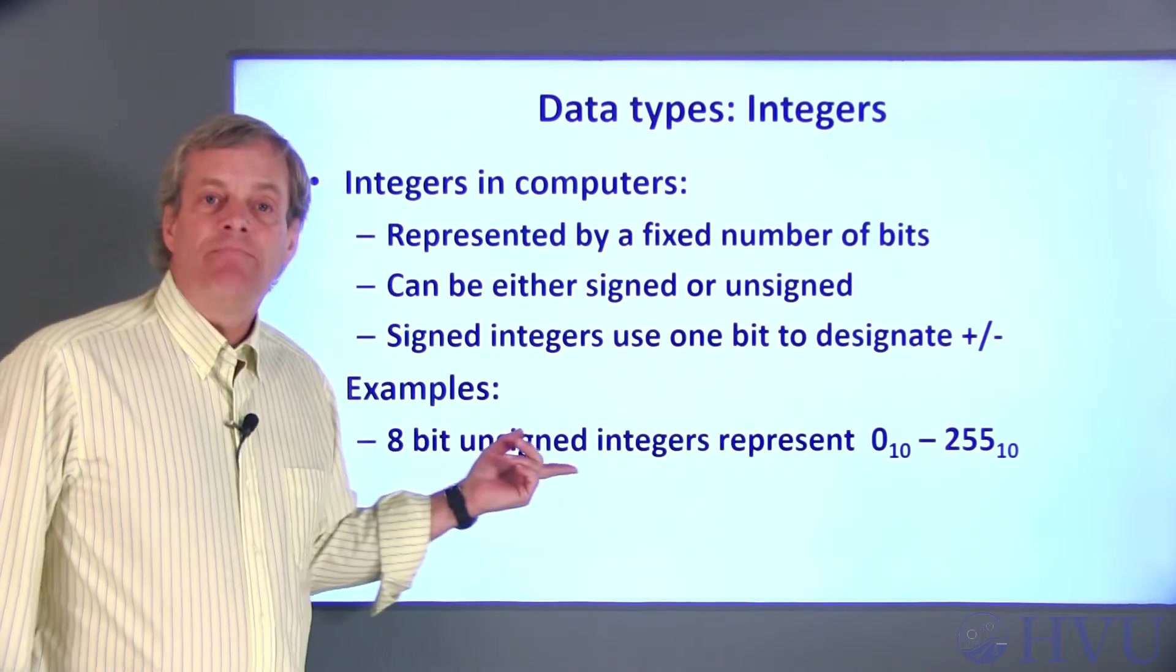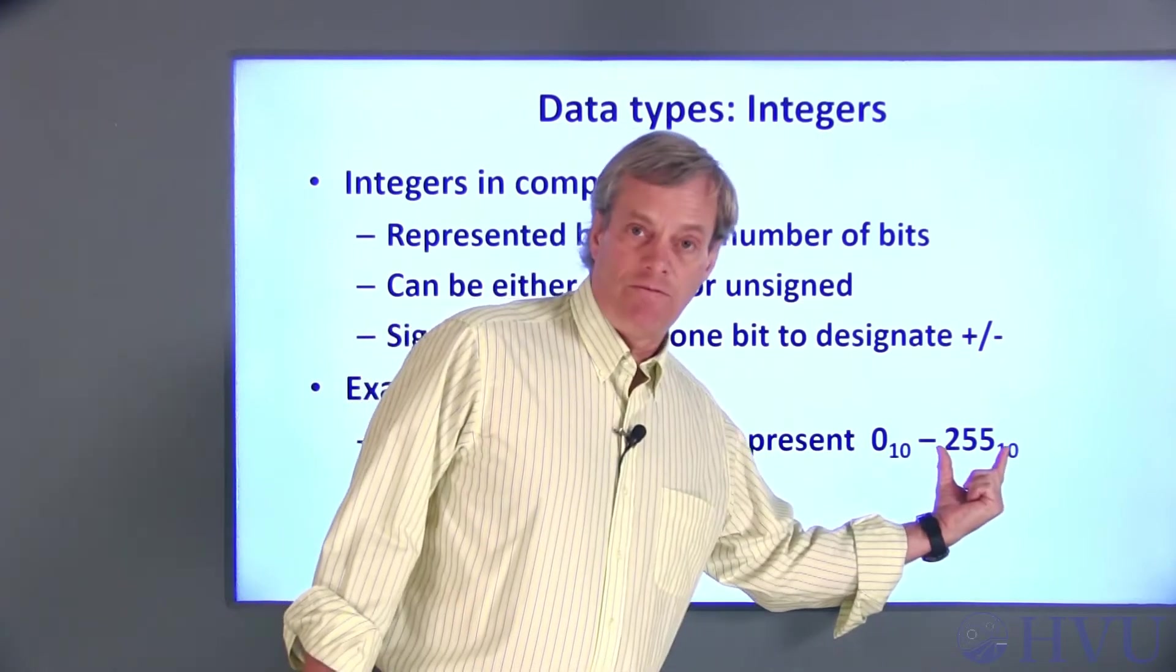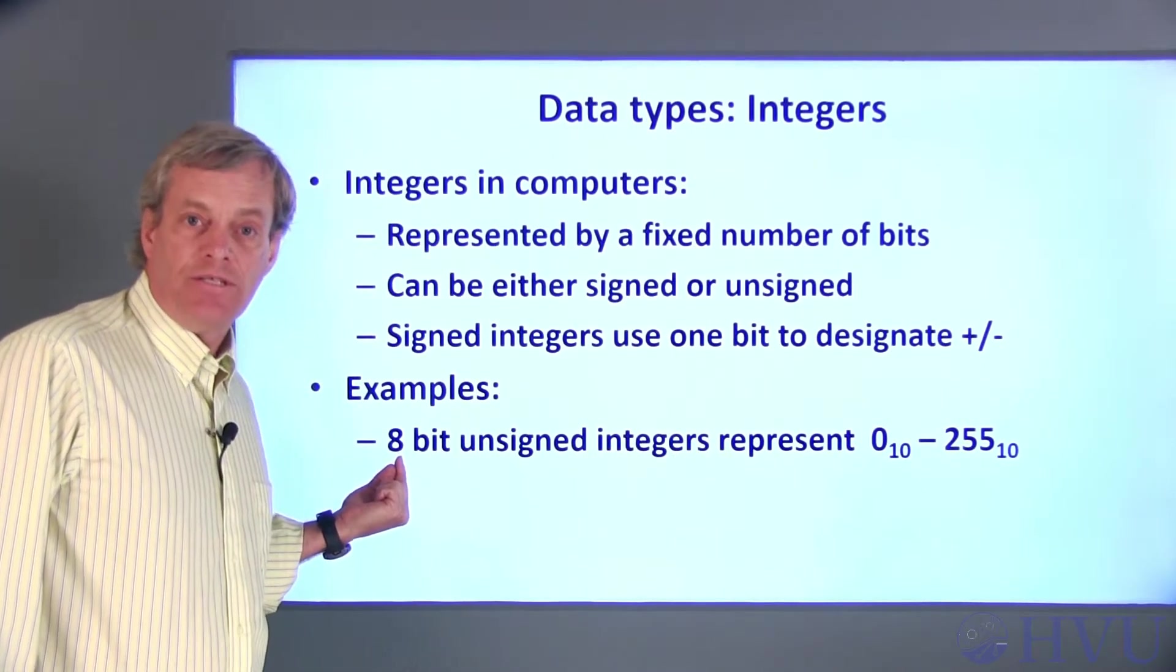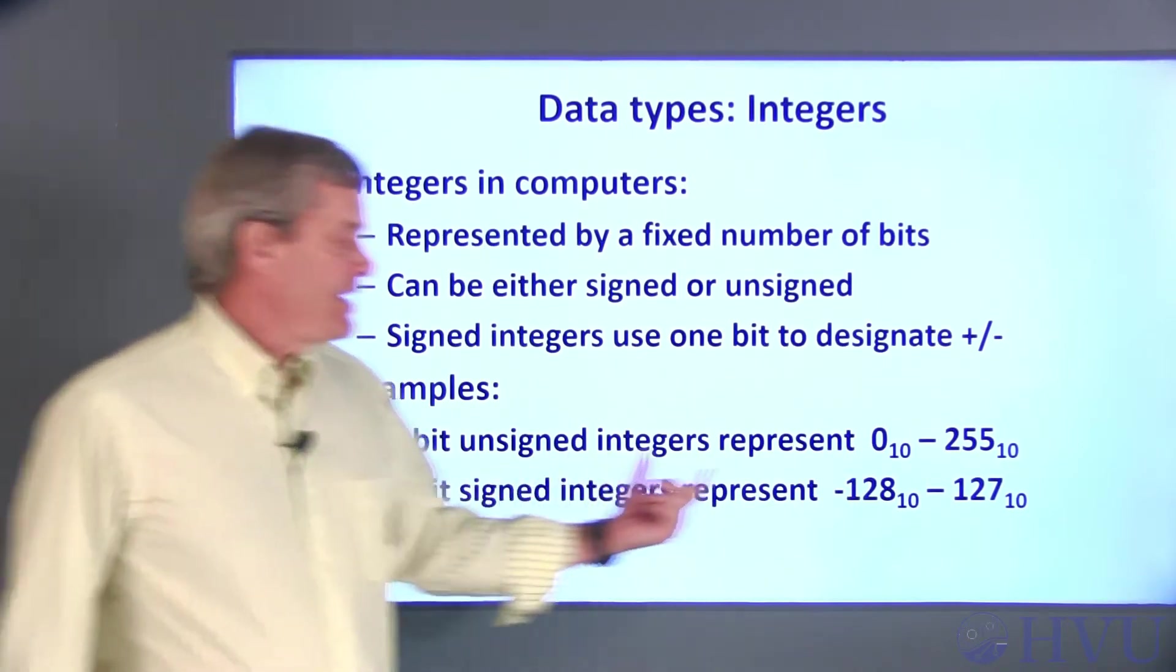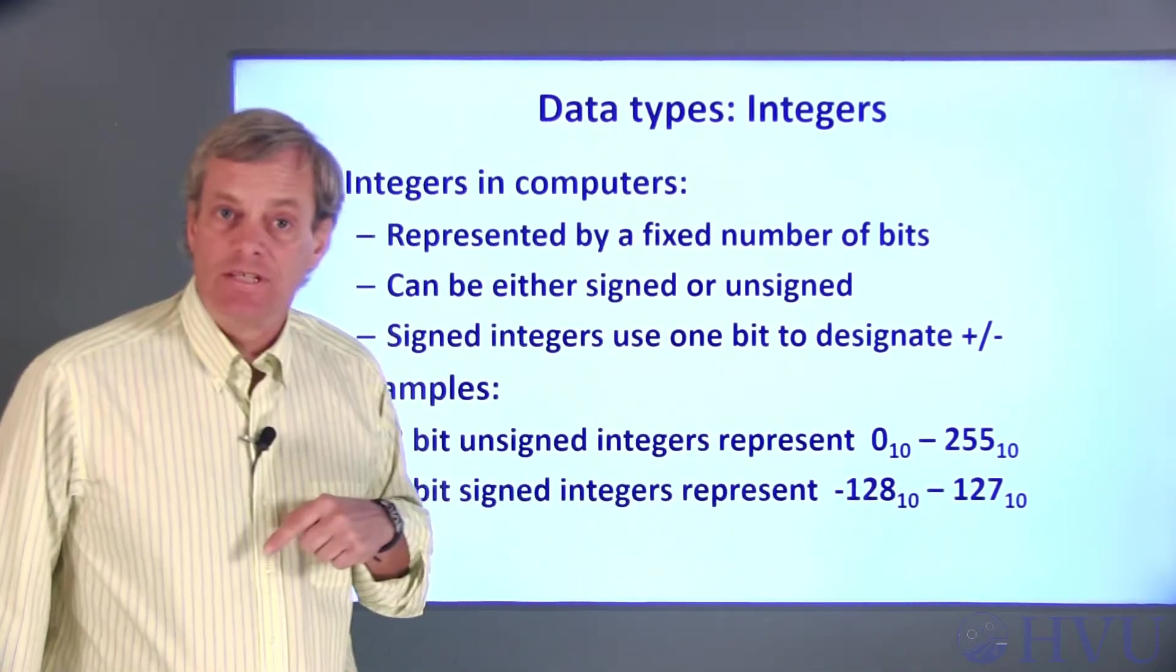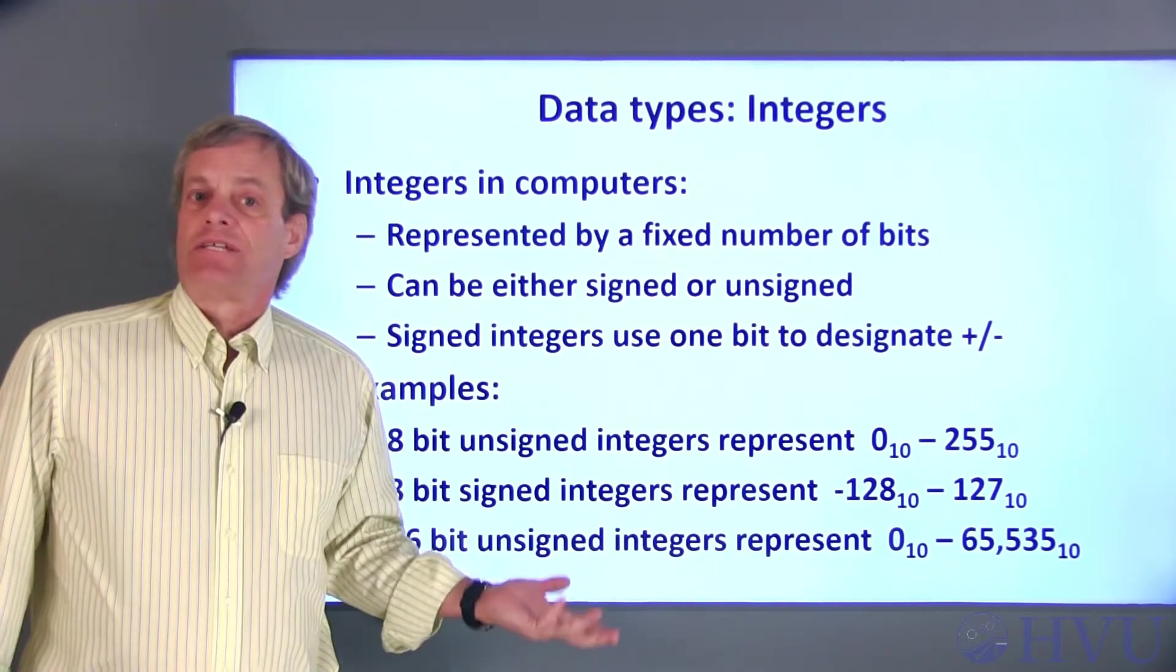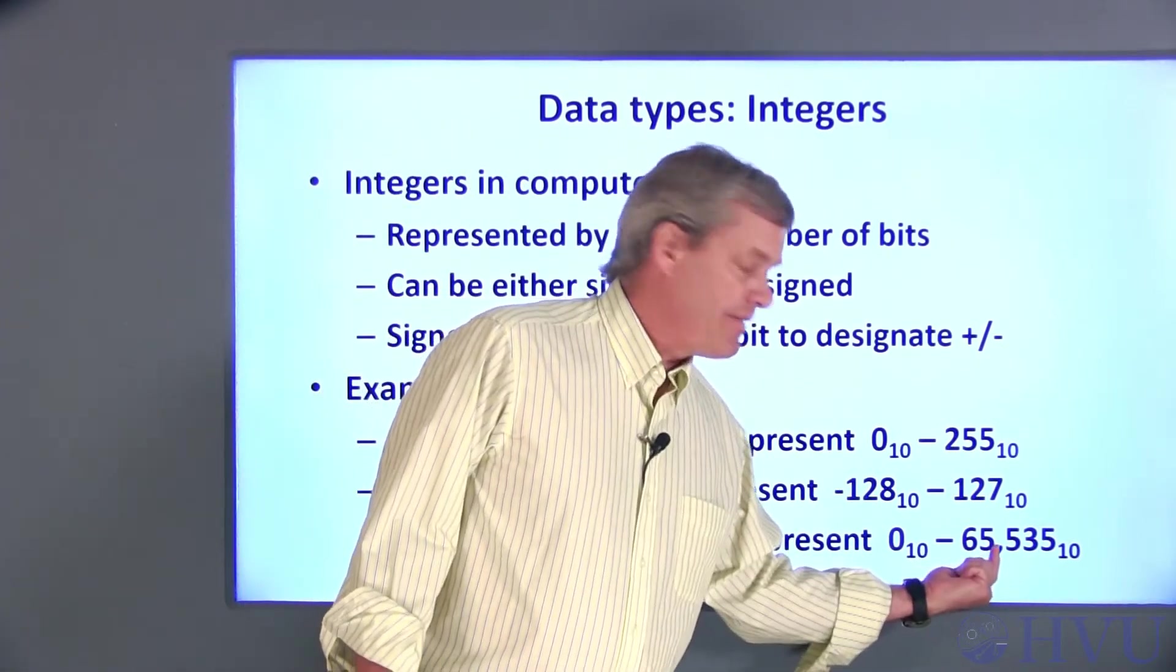For example, an 8-bit unsigned integer can be used to represent numbers from 0 to 255 in a base 10 numbering system. Notice that we have 256, or 2 to the 8th possible combinations here. An 8-bit signed integer can represent numbers from negative 128 to positive 127. This is still 256, or 2 to the 8th possible combinations. A 16-bit integer has 2 to the 16th possible combinations, which can represent base 10 numbers from 0 to 65,535.